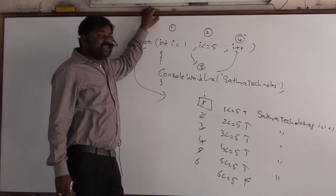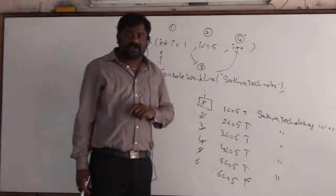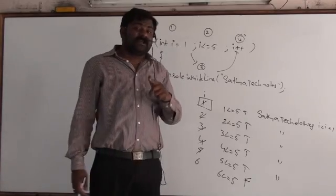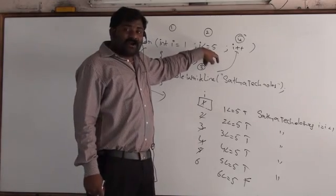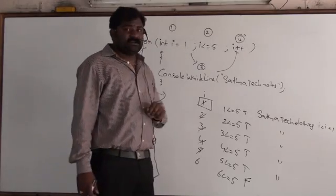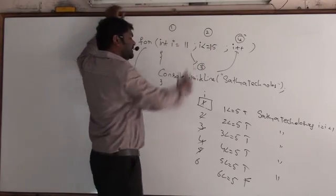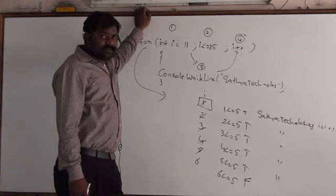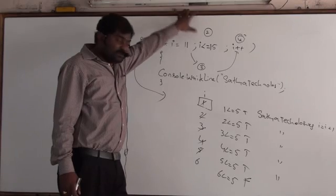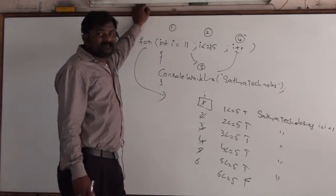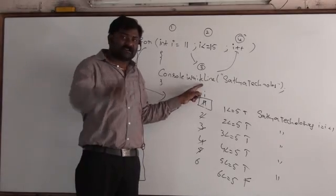Did you get it? What you need to understand here is why I am writing 1 here and 5 here. In this example you will not get any confusion because I am printing 'such a technology.' But in the next example, people will get confused. So remember: I want to rotate the loop for five times, so I am writing 1 to 5. It is 100% right.